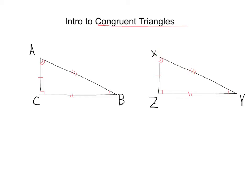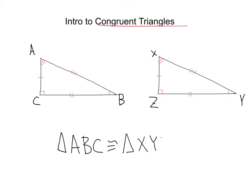So basically, congruent triangles means that all angles are congruent with the other triangle, and all corresponding sides are congruent with the other triangle. And how we write this is: triangle ABC is congruent to triangle XYZ.